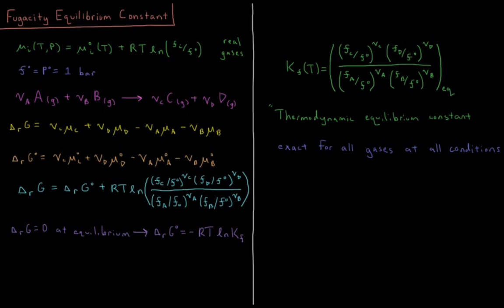This would also be called a thermodynamic equilibrium constant, where we use fugacities, which is good for not only ideal gases, but also real gases. The extra benefit in this case is that the thermodynamic equilibrium constant is exact for all gases — ideal and non-ideal — at all conditions of temperature and pressure where non-ideal behavior can result.